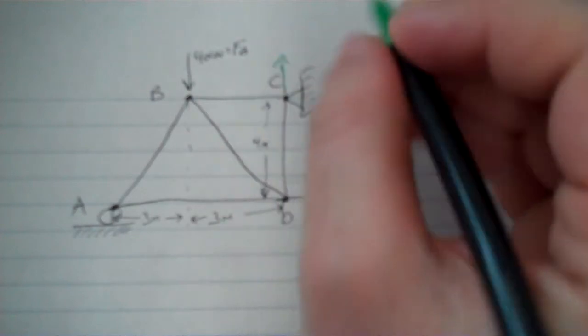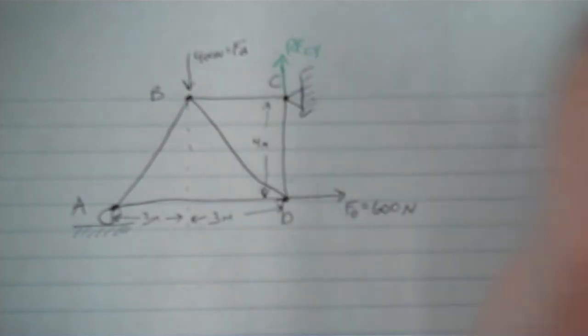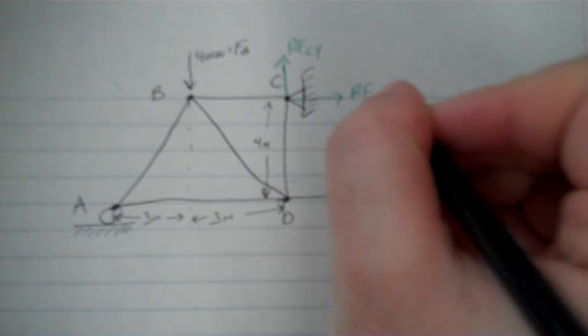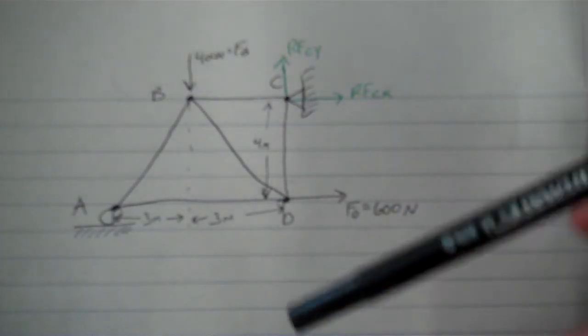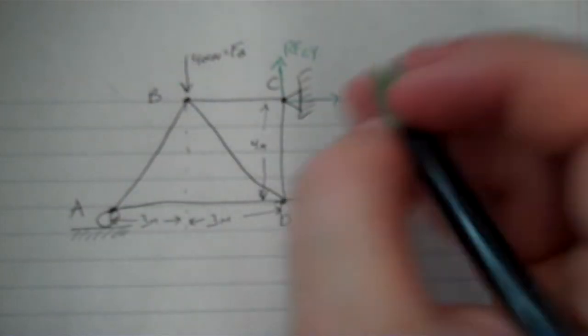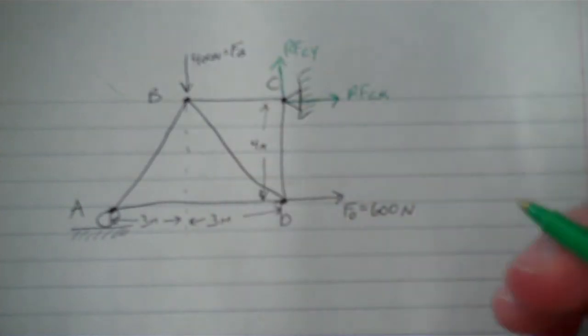So I have a reaction force at C. Now C is a pin, so I'm going to have reaction force CY and I'm going to have reaction force CX. Now I'm just assuming the positive direction because I don't know which direction it's going in, so I'm just going to assume positive. If I end up getting a negative number, I know it's in the opposite direction. I just assume up and I assume to the right.